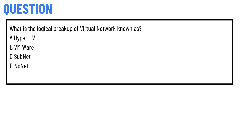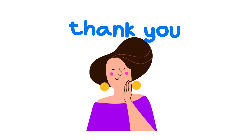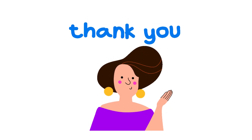Today's question is: what is the logical breakup of a virtual network known as a Hyper-V VM? Option C is subnet, option D is no net. The correct answer to the question is option C — subnet.